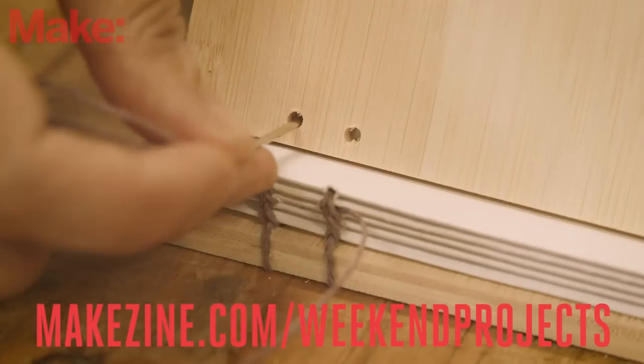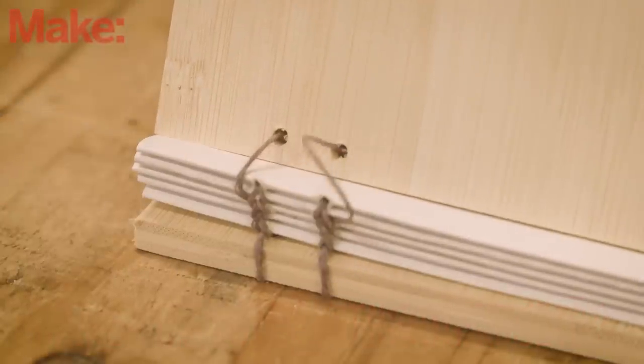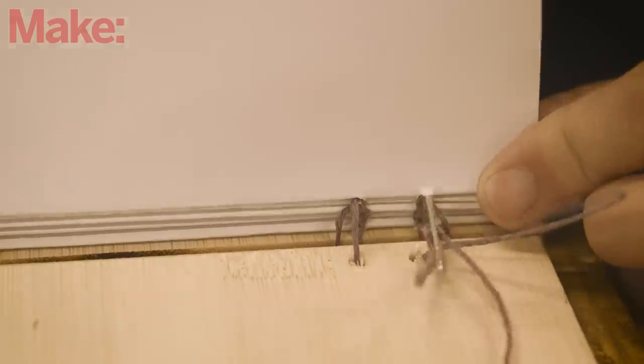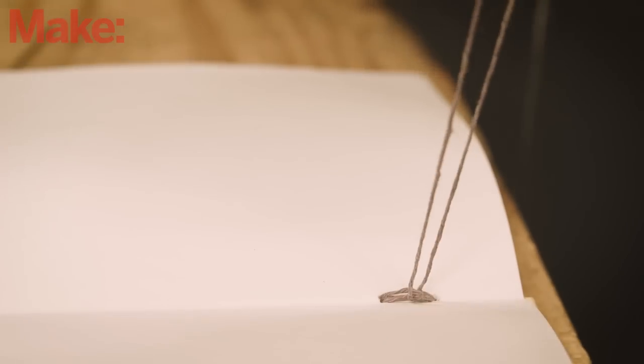Once you're at the cover and the last kettle stitch is done, we will now go around the outside of the cover like we did in the other cover. Thread the needles back into the last signature and tie two square knots. Cut the excess string and you now have your very own notebook.